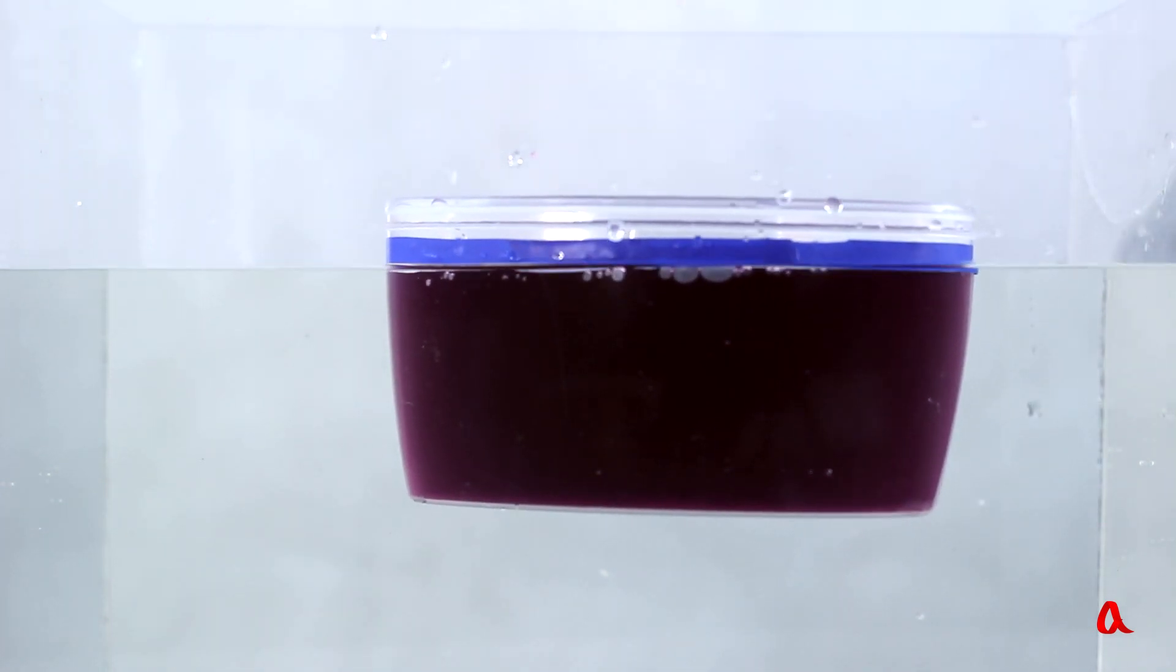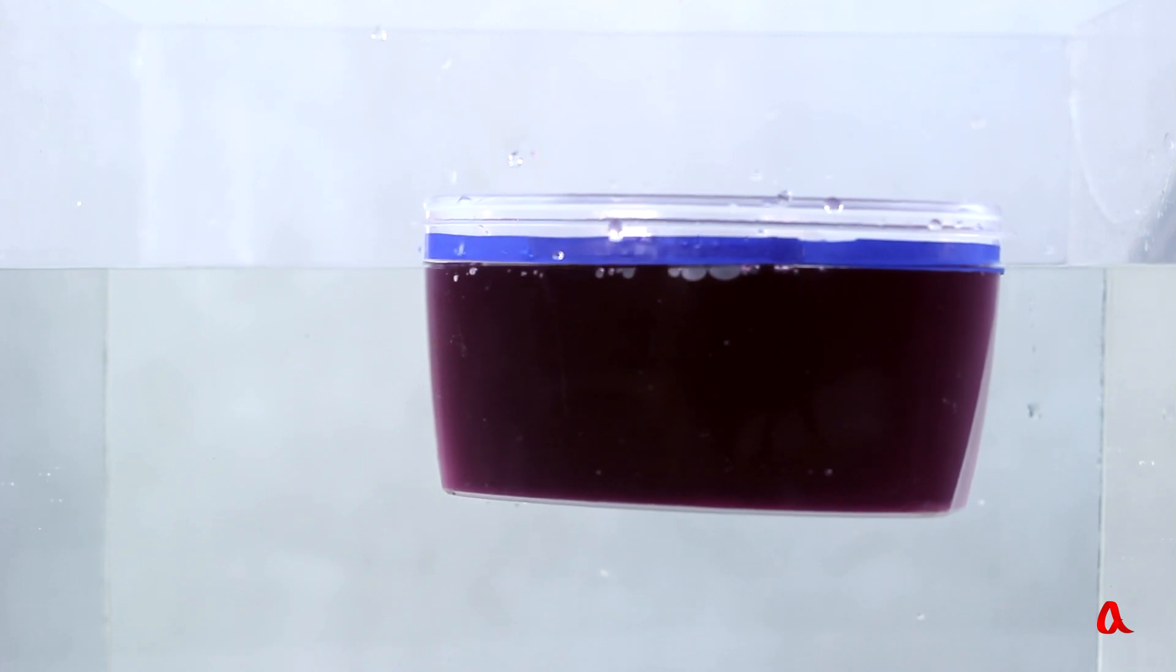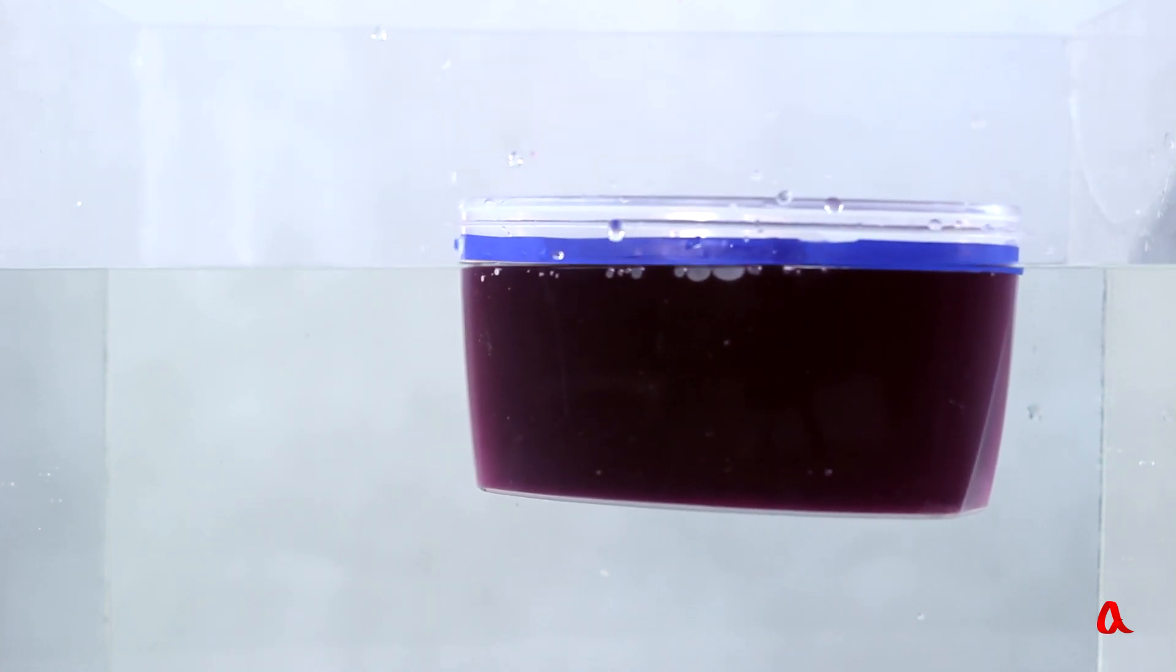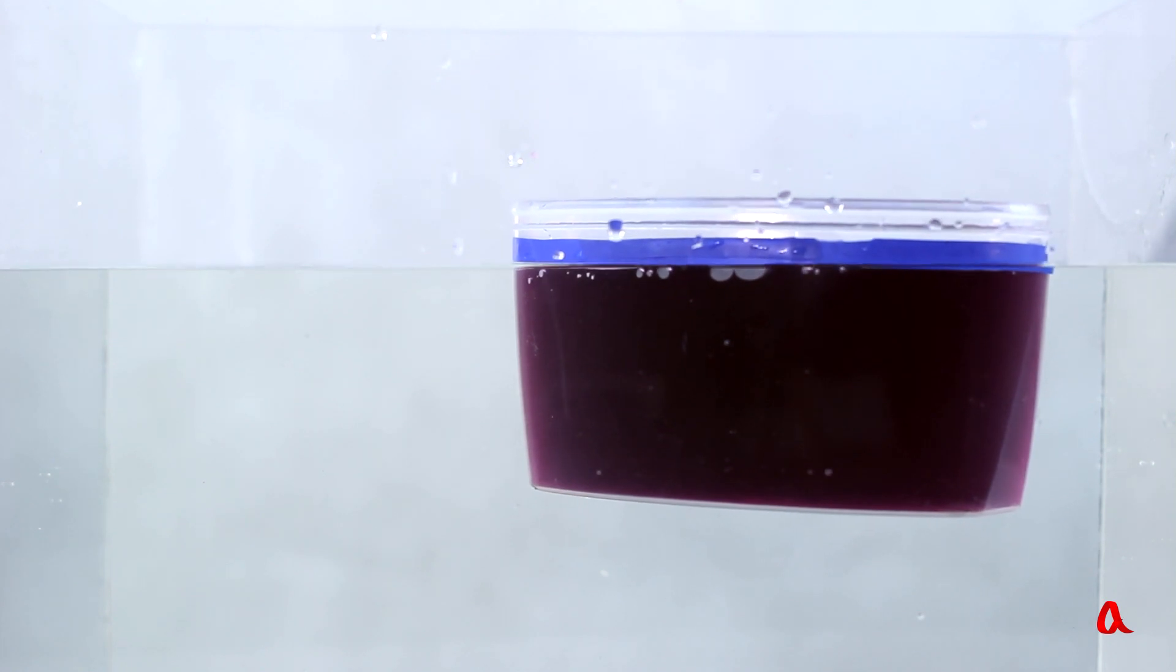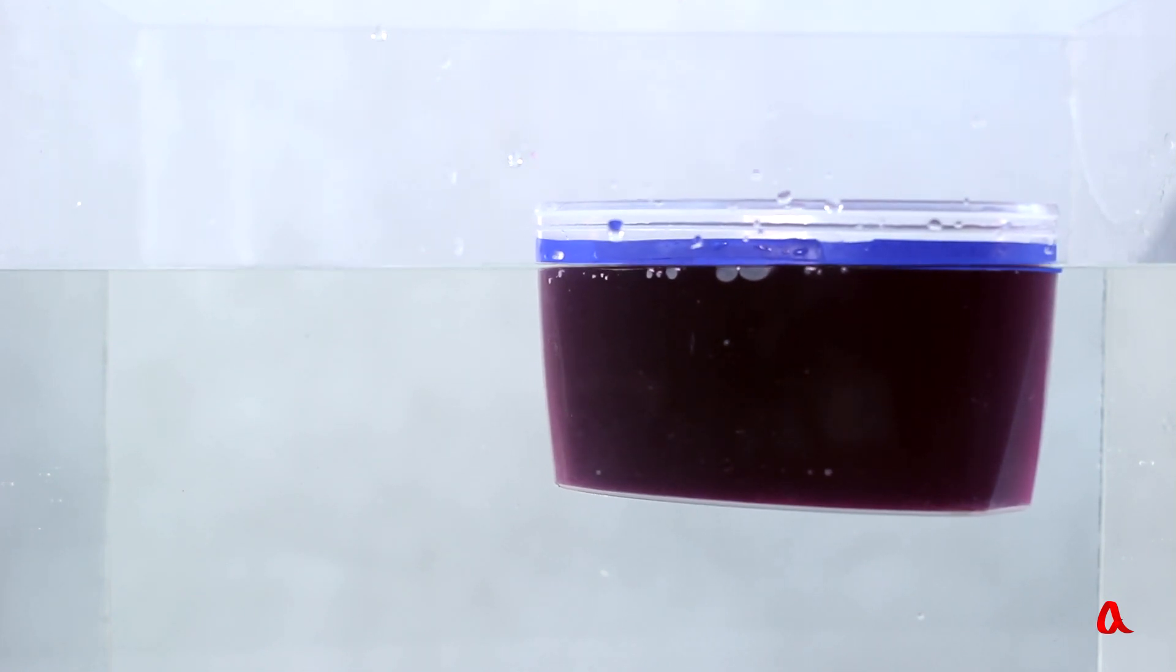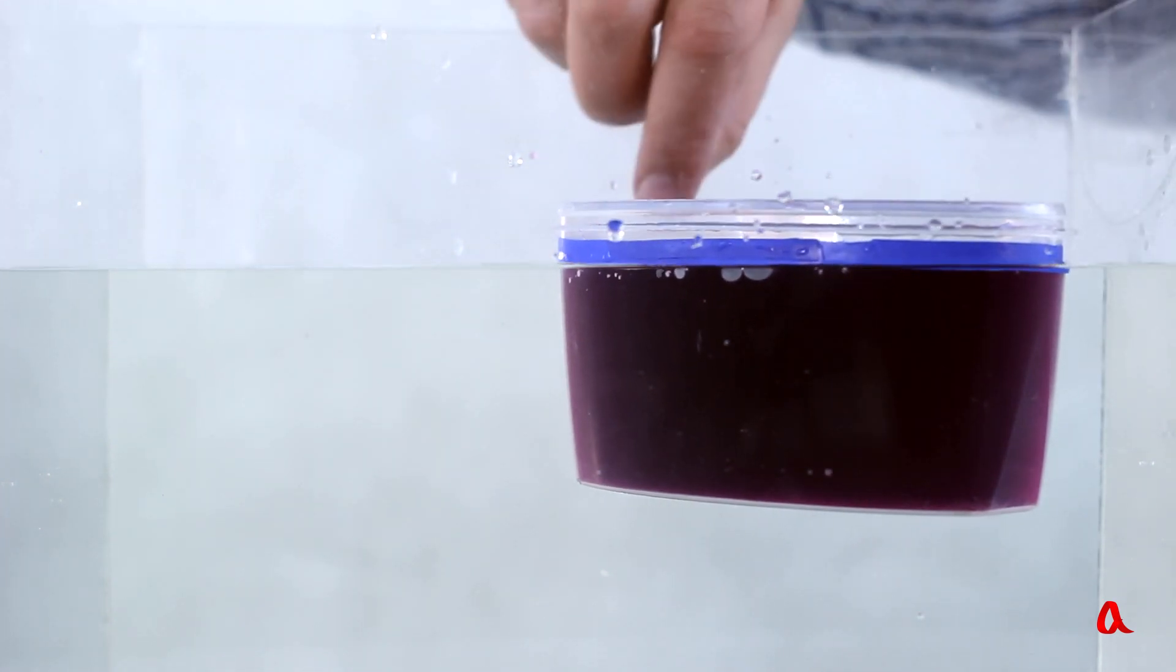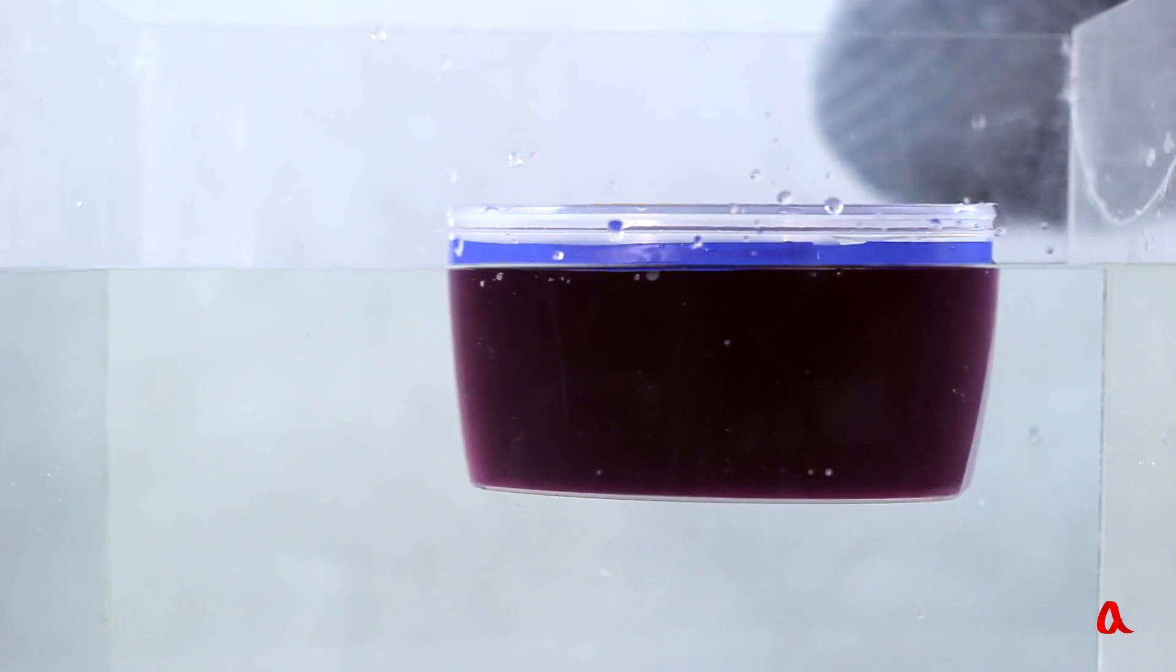Now the container has submerged to the level of the blue line and there are 500 cubic centimeters of colored water in it. The mass of each cubic centimeter of water is one gram, which means there are 500 grams of water in the container.